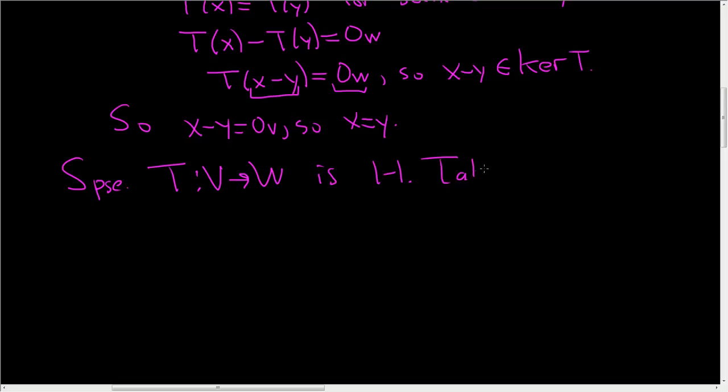So take any X in the kernel. If we show X is zero, then the only element in the kernel is zero. All right, so here's the trick. So then T of X is equal to zero. By definition, it's in the kernel. But zero is equal to T of zero.